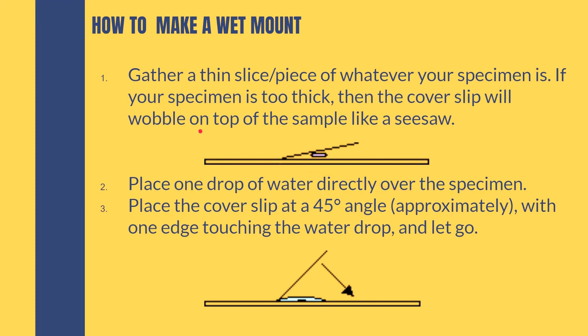Now, how to make a wet mount. Just like using the microscope, the best way to learn is to actually do it. You gather a thin slice of your specimen — make sure it is so thin that when you place the coverslip on top, it will lay flat and not wobble. If it wobbles, the specimen is too thick. It has to be thin enough for the coverslip to lay flat.